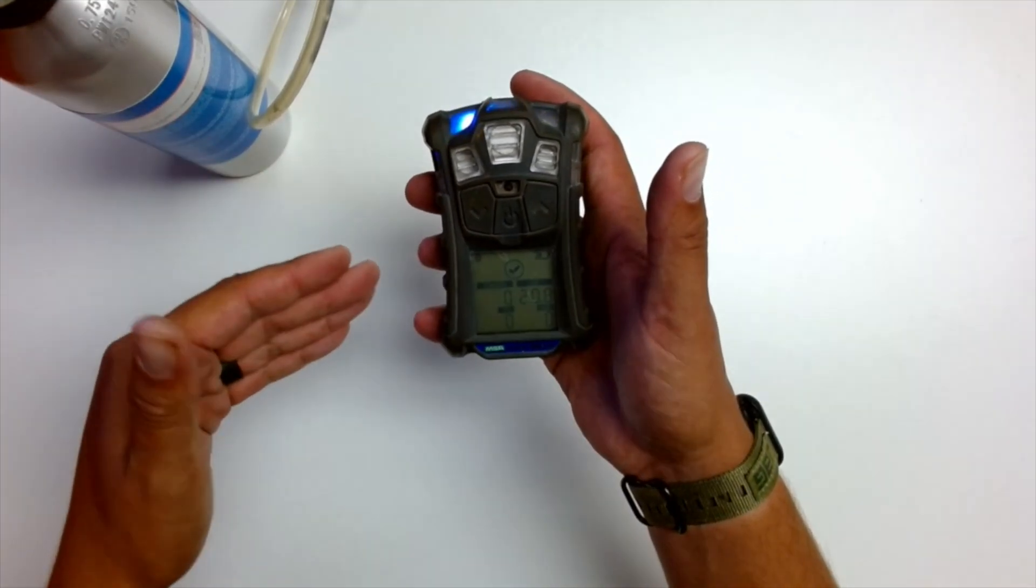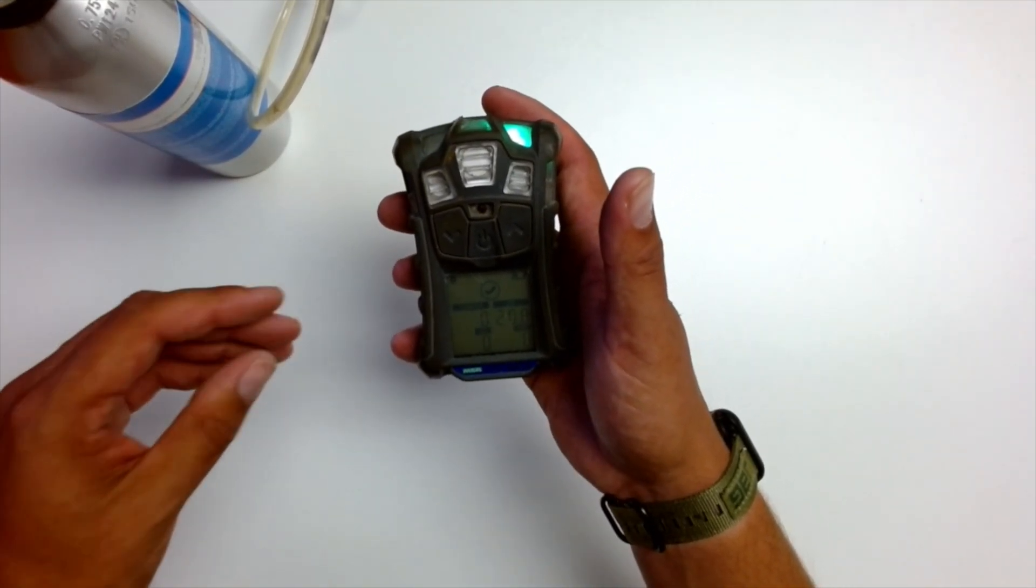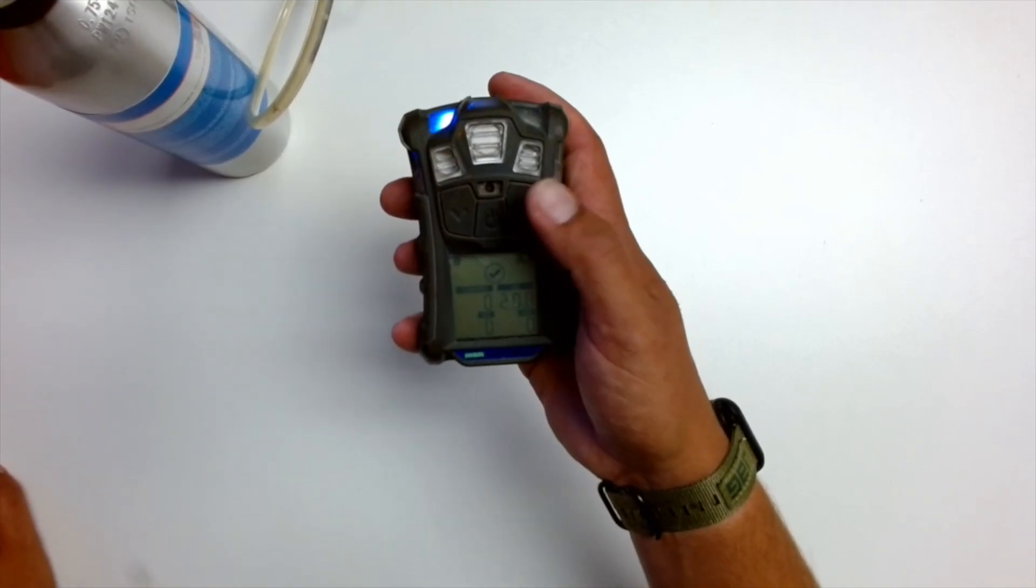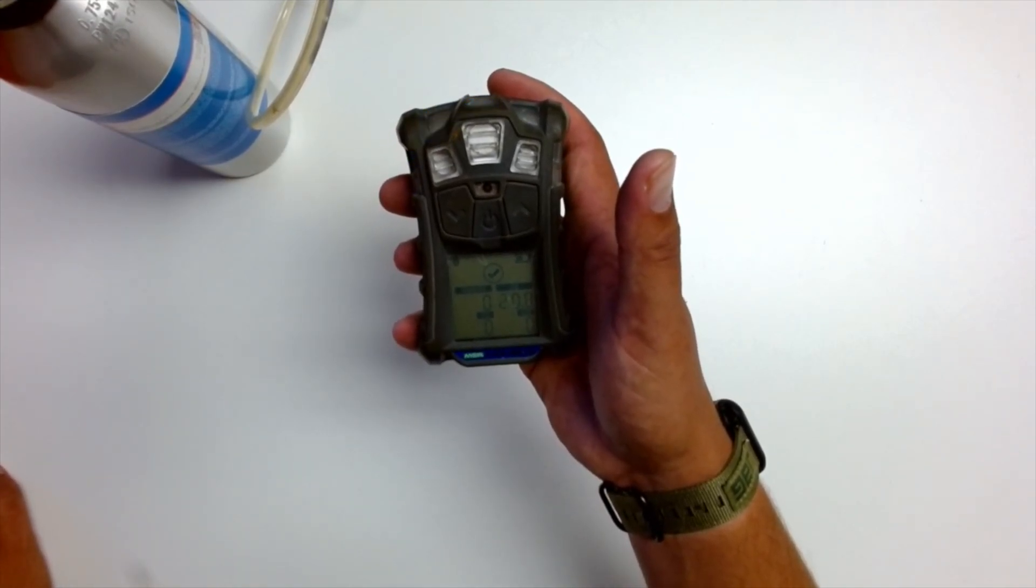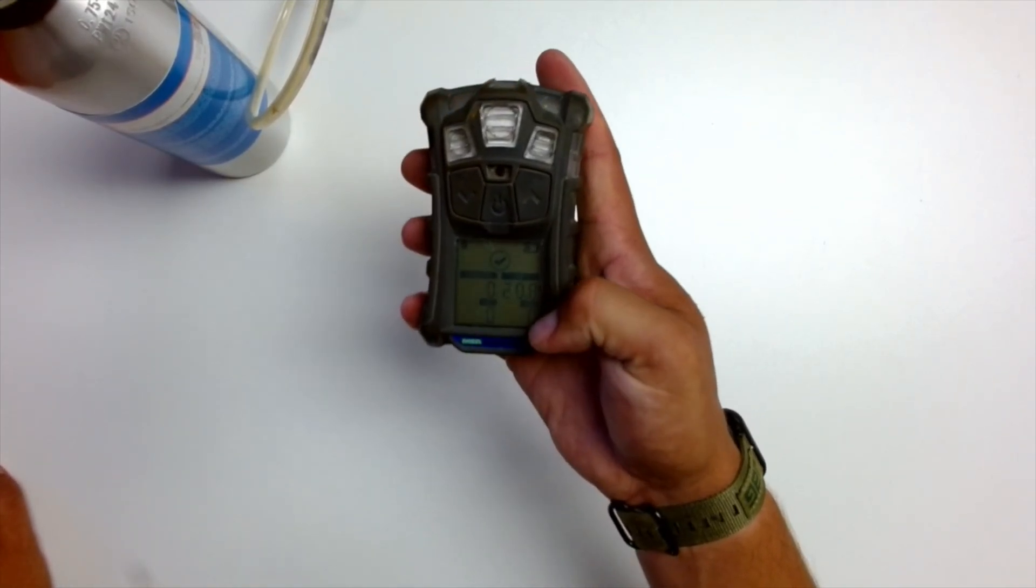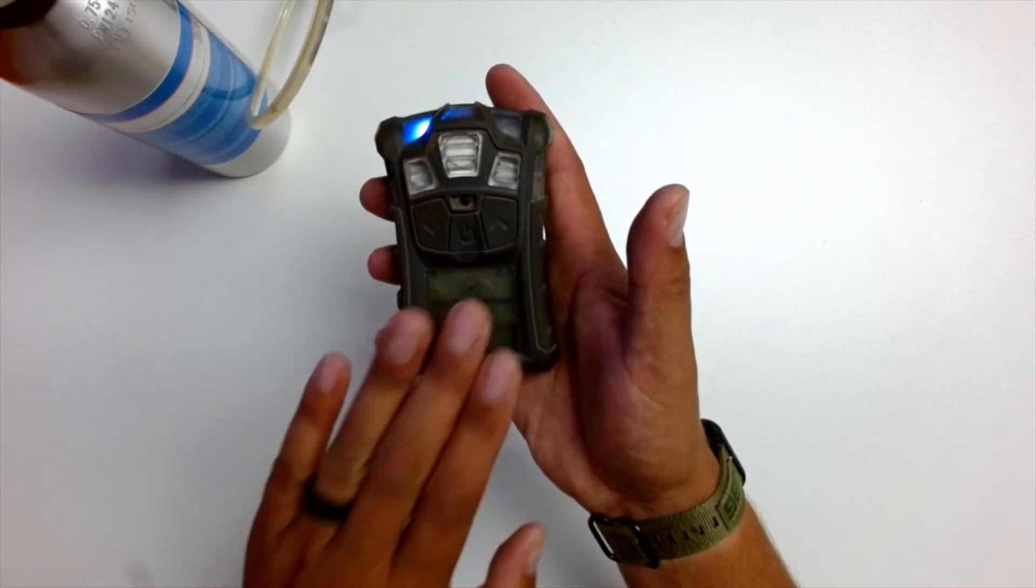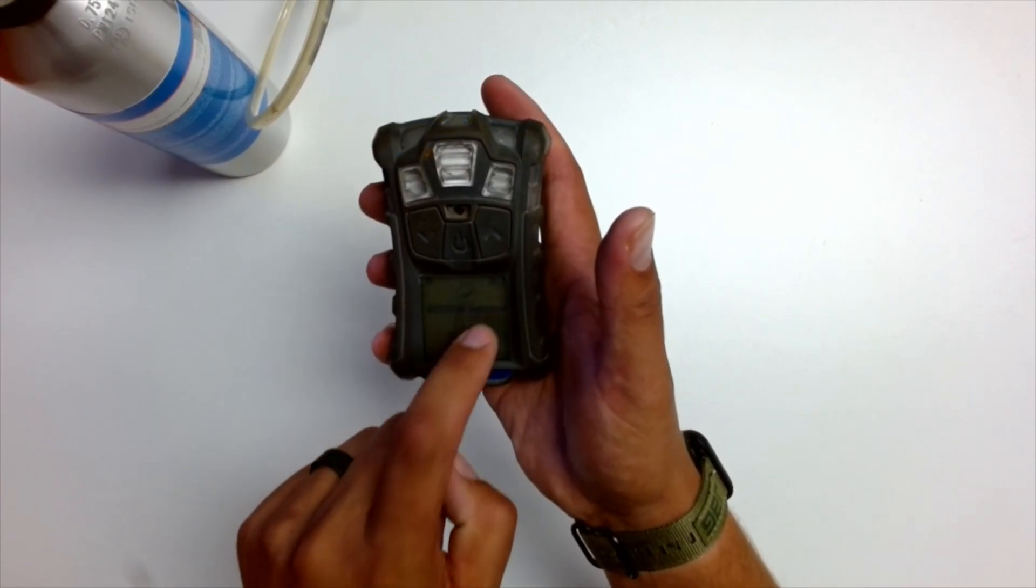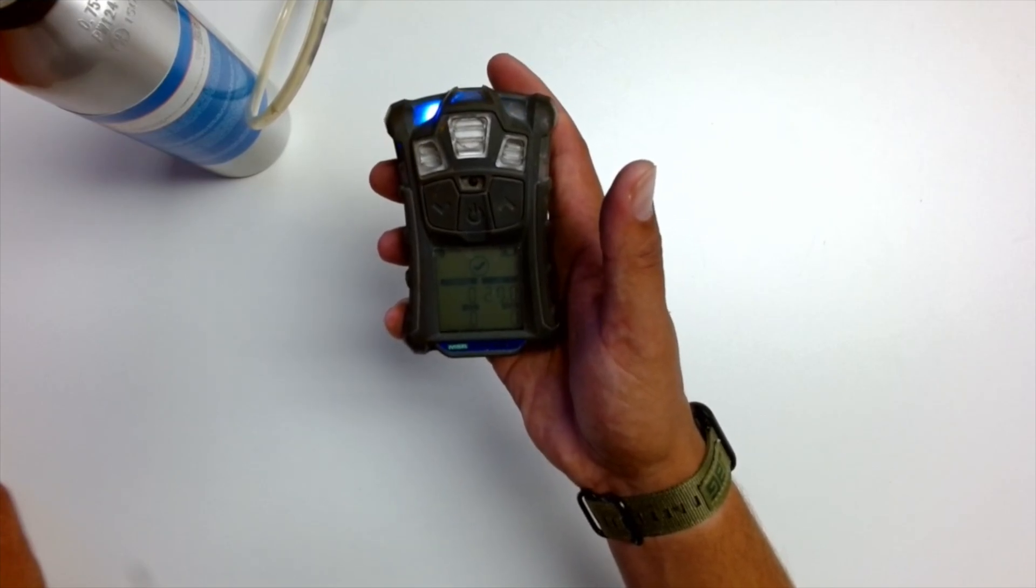So because gas was flowing through the monitor itself, basically all you want to do is, if you hit the up arrow at the end of that bump test, it will reset your alarm as well. Those values come back down to zero, but always make sure your values do come to zero and your O2 does come to 20.8.